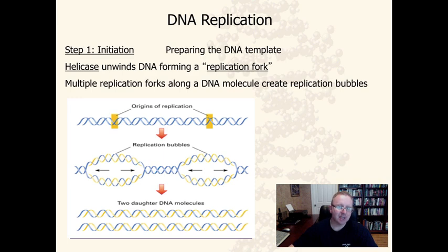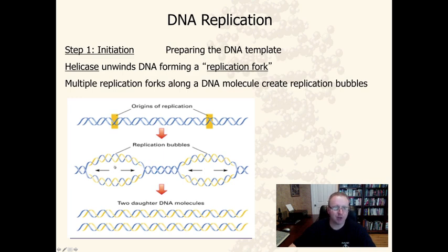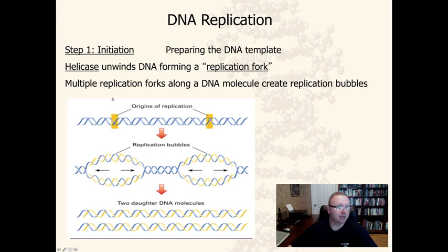One of those enzymes is DNA helicase. The -ase ending indicates it's an enzyme. Helicase unwinds the DNA double helix — that's where the name comes from — and forms what's called a replication fork. DNA helicase lands on the origin of replication and pushes out in both directions, creating a bubble-like structure. At the end of each bubble is a replication fork. In eukaryotic DNA replication, there are multiple replication forks along a DNA molecule, which helps speed up the replication process.